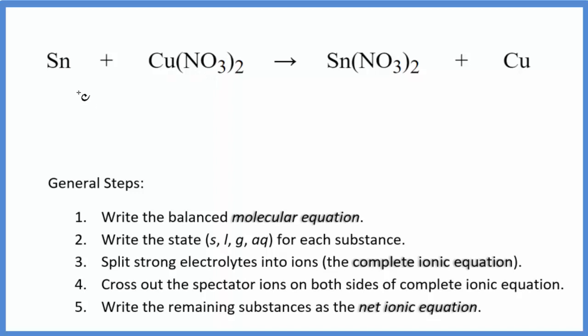It's a single displacement reaction. The tin is going to push the copper out, and then it'll be by itself. Then the tin here will be with the nitrate. So we have this single displacement reaction, and the first thing we need to do is balance the molecular equation. In this case, it's already balanced. I have the nitrate, I have two nitrates, two nitrates, and I have a tin and a copper on either side. So it's already balanced, which is nice.